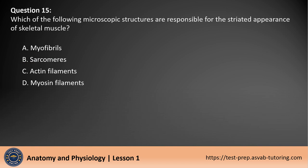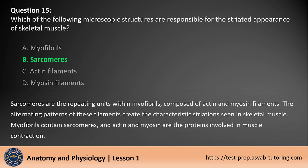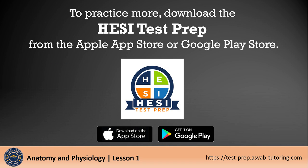Question 15. Which of the following microscopic structures are responsible for the striated appearance of skeletal muscle? A. Myofibrils. B. Sarcomeres. C. Actin filaments. D. Myosin filaments. The answer is B. Sarcomeres are the repeating units within myofibrils, composed of actin and myosin filaments. The alternating patterns of these filaments create the characteristic striations seen in skeletal muscle. Myofibrils contain sarcomeres, and actin and myosin are the proteins involved in muscle contraction. To practice more, download the HESI test prep from the Apple App Store or Google Play Store.